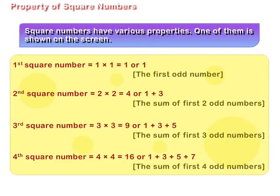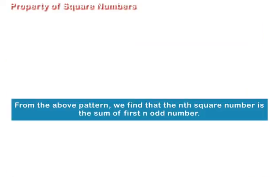From the above pattern, we find that the nth square number is the sum of first n odd numbers.